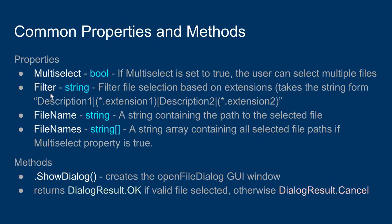There is a Filter property that takes a formatted string value. This Filter property allows you to create filters — for example, if you wanted to only allow the user to search for text files or HTML files, you can build a set of filters. The FileName property contains a string with the absolute file path to the selected file. If MultiSelect is true, the FileNames property contains a string array of all file paths to each selected file.